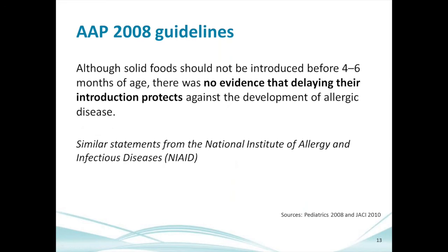Between 2000 and 2008, increasing data showed peanut allergy was rising despite advice to delay, and that countries introducing peanut early — most notably Israel — had essentially no peanut allergy. Based on this, in 2008 the American Academy of Pediatrics reversed course, stating there was no evidence that delaying beyond four to six months helps prevent peanut or other food allergies. However, it still didn't tell parents exactly when and how to introduce peanut-containing food.